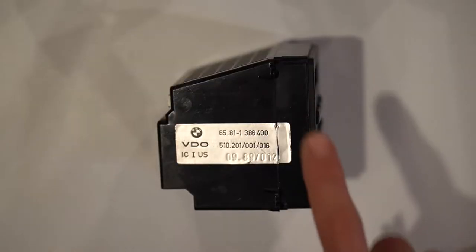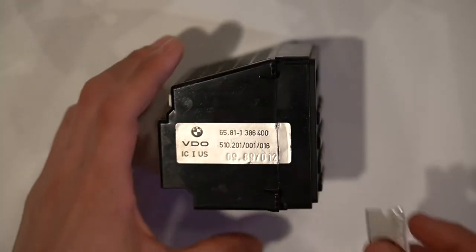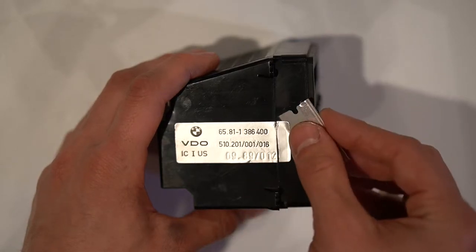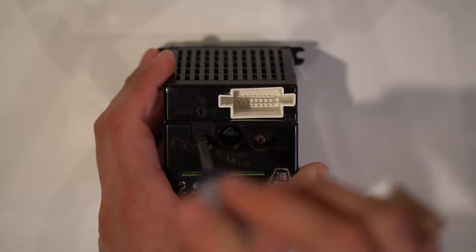To separate the front assembly from the back shell, first cut or peel the sticker on the side. Next remove these two screws.